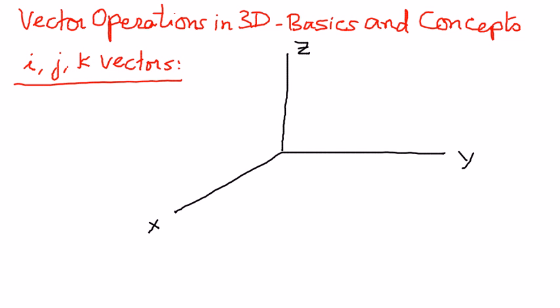and if we want to represent one unit on the positive x-axis, like that, and if we call this as i, if we represent one unit on the positive y-axis, and if we represent that as j, and if we want to represent one unit on the positive z-axis, and if we call that as k,